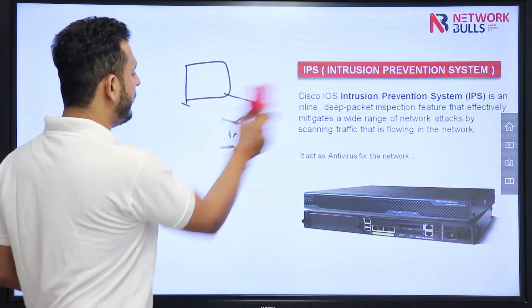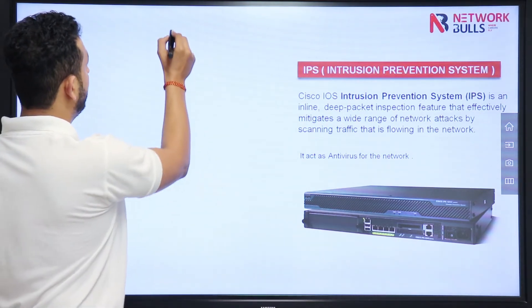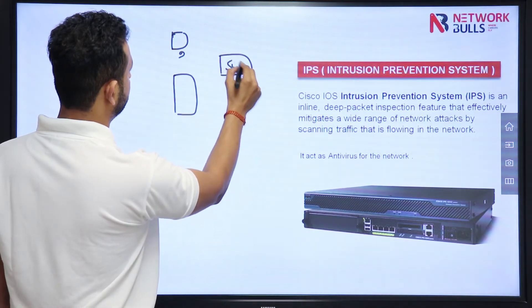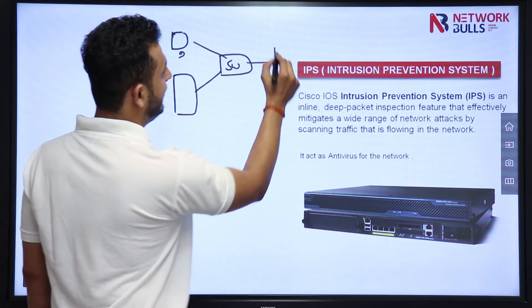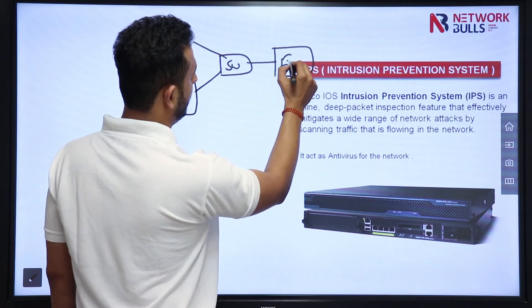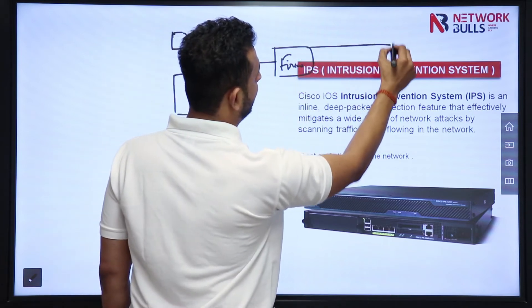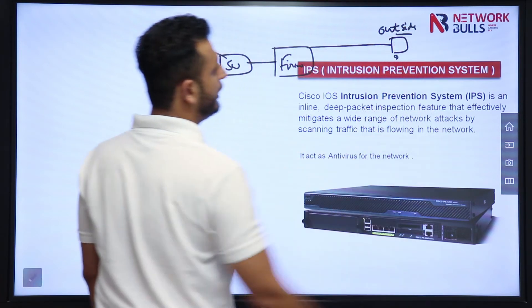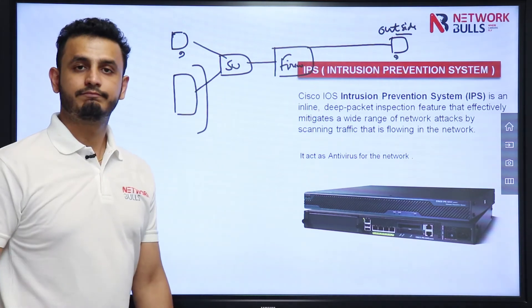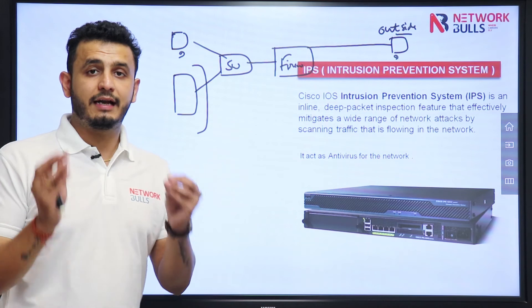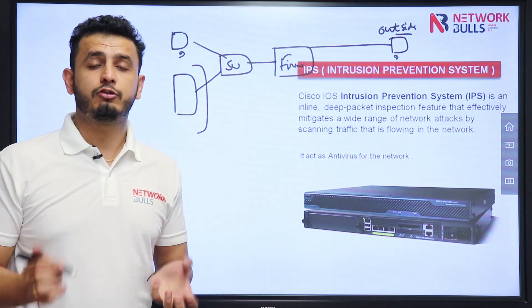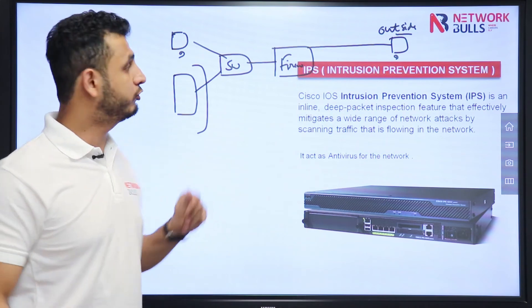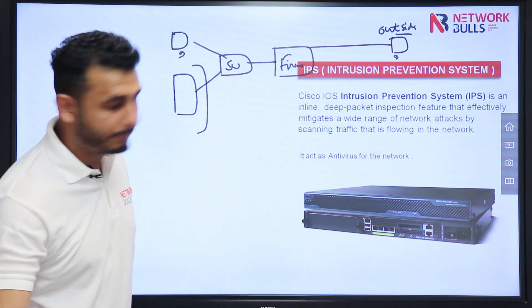In the same way, if I talk about a network, let's say this is my trusted network. I have a user and a server. And between the trusted and untrusted network, I have a firewall. This is an outside user, a user present on the untrusted network. This user is allowed to access my server, but how will I make sure the data the user is uploading to the server is not malicious? So there should be a device which is scanning all the traffic that is entering and exiting my network. That traffic scanning is done by the box called IPS.